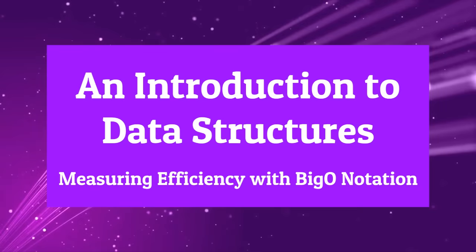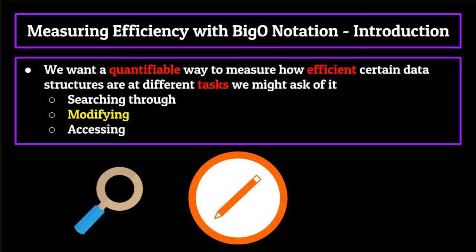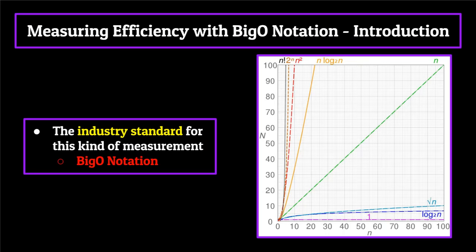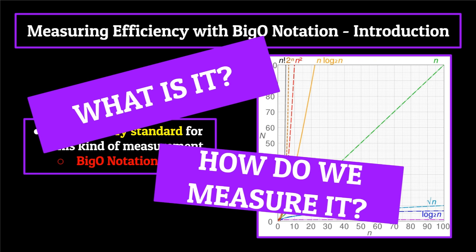Before we talk about all these data structures like maps and heaps, we want a quantifiable way to measure how efficient a certain data structure is at the different tasks we might ask of it. If we're going to be storing extremely large amounts of data, being able to search through, modify, or access the information within a data structure needs to be fast and efficient. The industry standard for this kind of implementation is big O notation. So what exactly is big O notation, and how do we measure it for a specific data structure? For most of the basic and intermediate data structures in this series, we're going to be spending some time talking about its efficiency using big O notation. So this is definitely a topic you're not going to want to skip.